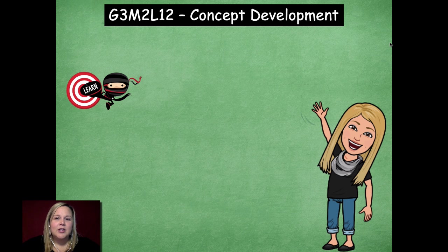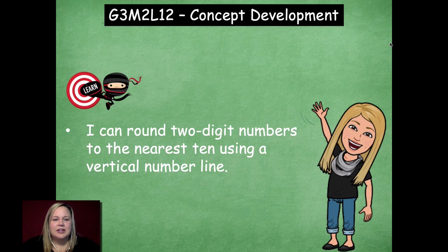Hey boys and girls, it's Mrs. Walker. For our lesson today, we're going to talk about how we can use the vertical number line to help us estimate numbers to the nearest 10. So our learning goal for today says I can round two digit numbers to the nearest 10 using a vertical number line.